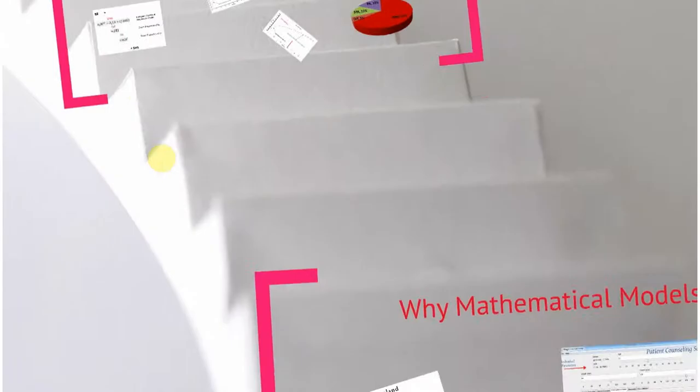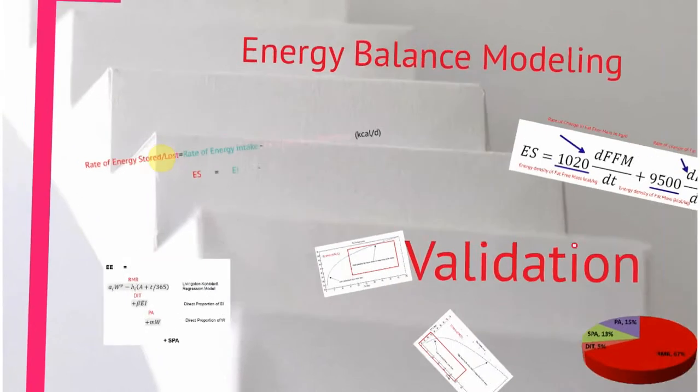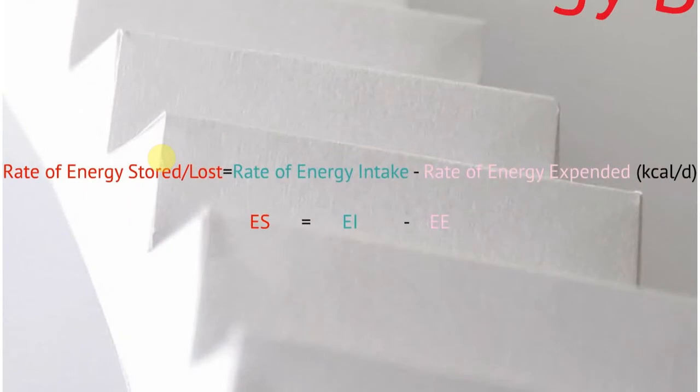Let me give you a flavor of how we create those trajectories because they're not developed using statistical modeling. Often some of the models that I have are confused with statistical modeling, but this is a little bit different. We begin with a law of physics, the first law of thermodynamics, which boils down in humans to what we know as the energy balance equation.